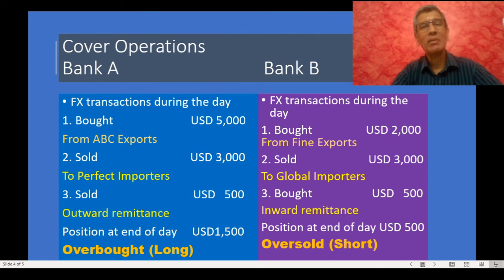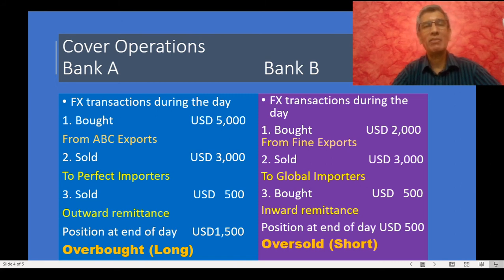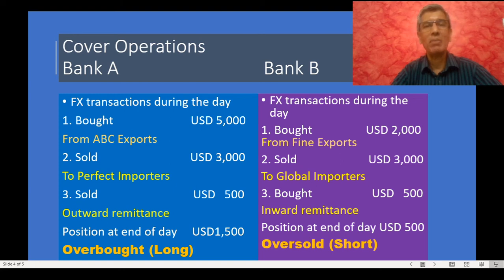Bank B bought 2,000 US dollars from an exporter, giving it an overbought position of 2,000 US dollars at the end of the first transaction. Subsequently it sold 3,000 US dollars to an importer to pay its foreign supplier. So at the end of the second transaction, Bank B has an oversold position of 1,000 US dollars.